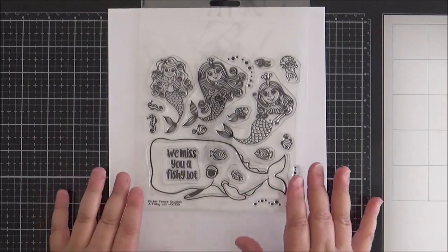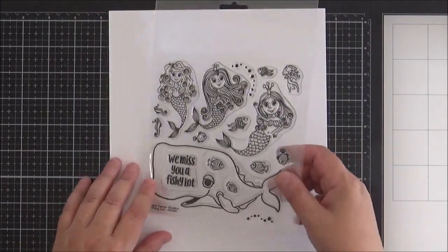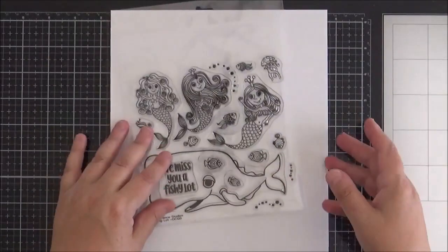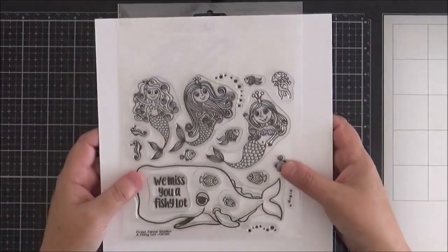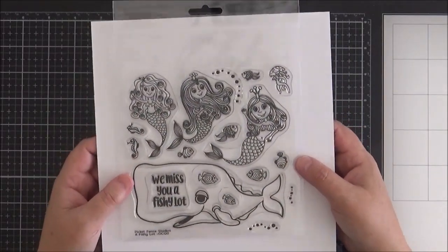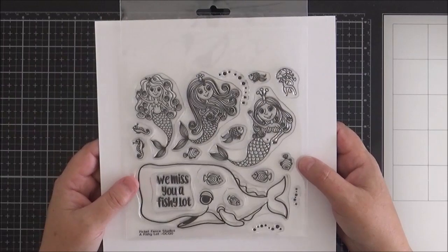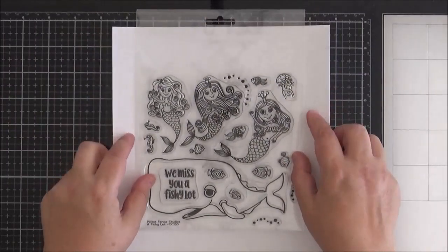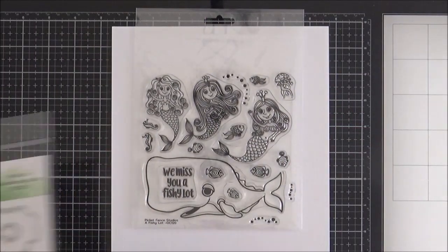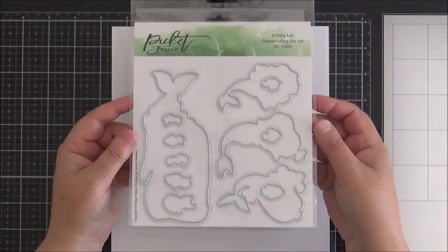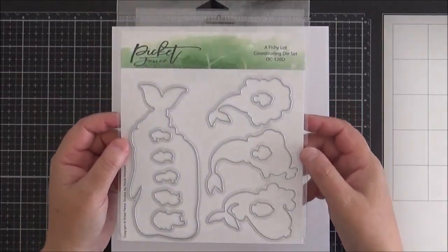I definitely had to use this. I've put my set against a white cardstock. I didn't have mine in the original packaging. So to be able to see it clearly, I've just put some white cardstock behind. And of course, it does come with the coordinating dies just to make your life a little easier.